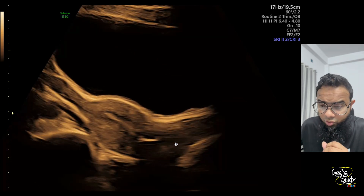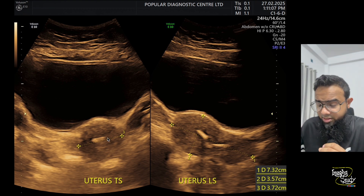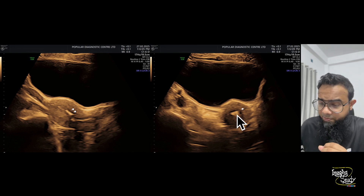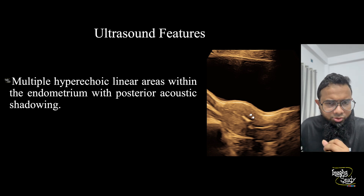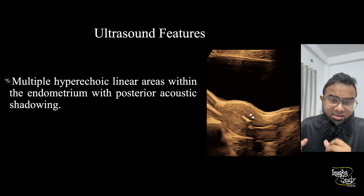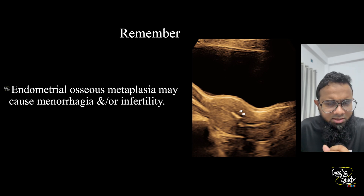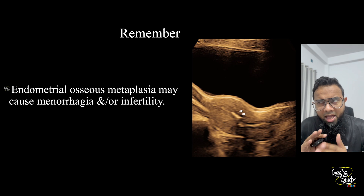The uterus is normal in size on both longitudinal and transverse sections. These are the calcific foci visible on both sections. In summary, there are multiple hyperechoic linear areas within the endometrium casting faint posterior acoustic shadows. These features are consistent with endometrial osseous metaplasia.